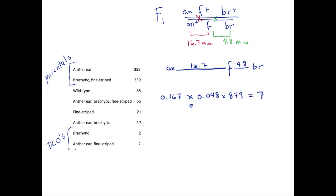This equation is 0.167 times 0.048 times 879, which equals 7. This gives us the number of double crossover offspring we would expect to see among 879 plants, based on our map of the chromosome. How many did we actually find? The observed number of double crossovers, represented by the phenotypes brachytic alone and anther-ear and fine-striped, is 4.